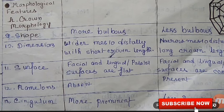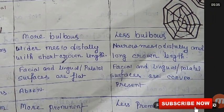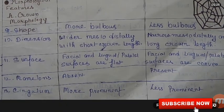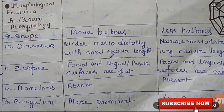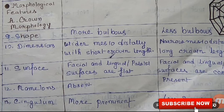Regarding dimension: deciduous teeth are wider mesiodistally with a short crown length, whereas permanent teeth are narrower mesiodistally with a long crown length. Regarding surfaces: in deciduous teeth the facial and lingual or palatal surfaces are flat, while in permanent teeth the facial and lingual surfaces are convex.